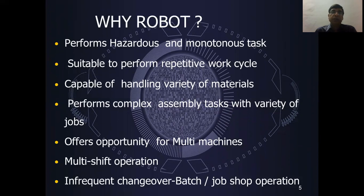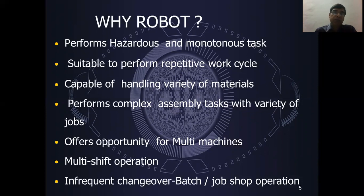Why use a robot? Robots are built for basic processes — they are used for hazardous and monotonous tasks. The robot is suitable for repetitive work cycles and for handling various materials. The robot is also very capable of working on complex assembly tasks and performing a variety of jobs.